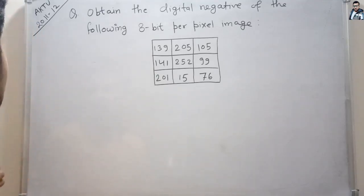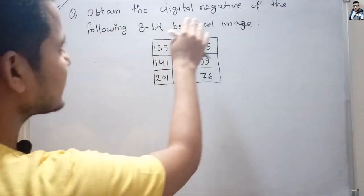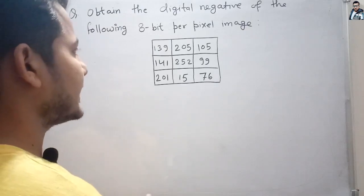Hi friends, let us see this question that was asked in GATE 2011-12. The question is: obtain the digital negative of the following 8-bit per pixel image.